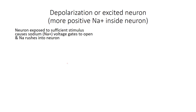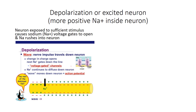If we take a look at depolarization, now we're talking about an excited neuron — a neuron that has been exposed to a sufficient enough amount of stimulus. This is the big deal: it causes sodium voltage gates to open up. And sodium, which is positively charged, comes rushing inside the neuron. You can see the sodium rushing in, and once the positives are inside, this section is now said to be depolarized.